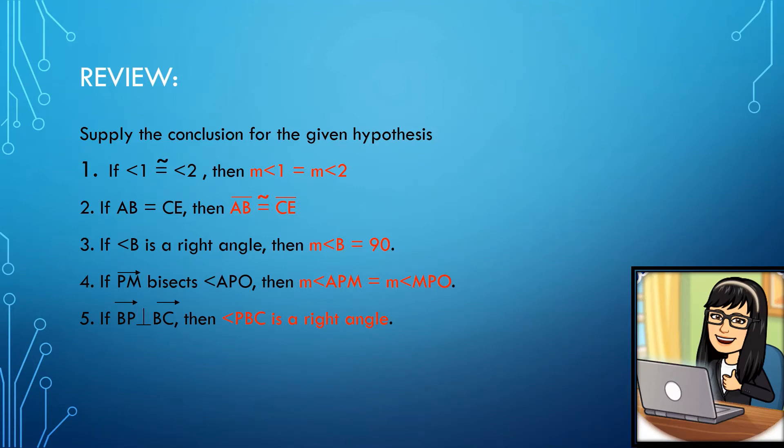Number two: if AB is equal to CE. AB and CE are referring to the lengths of segment AB and segment CE. So if they have equal length, same as number one, they are also congruent. Your conclusion will be: segment AB is congruent to segment CE.